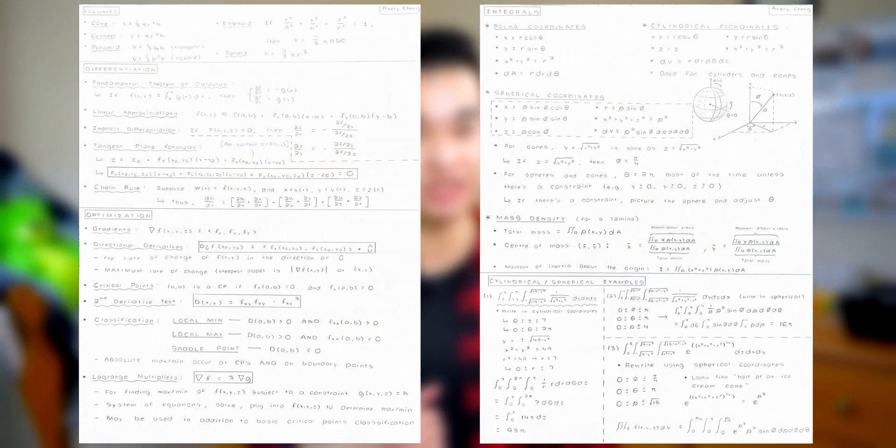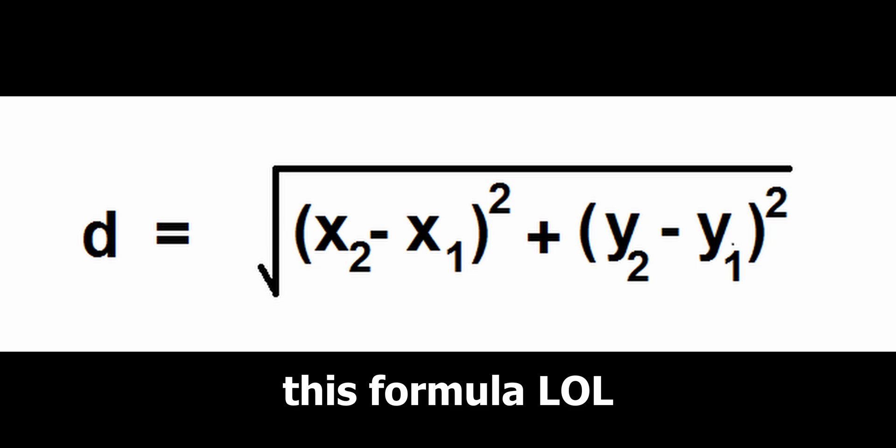The final exam is held in person and consists of 7 to 8 questions of moderate to slightly challenging difficulty. For our final exam we were allowed to bring one double-sided letter-sized handwritten formula sheet and there were no restrictions on what we could put on it. For context, this is what my formula sheet looked like, but I completely forgot to put the formula for the Euclidean distance between two points on my formula sheet and that really screwed me for one of the questions on the final, so don't make that mistake.